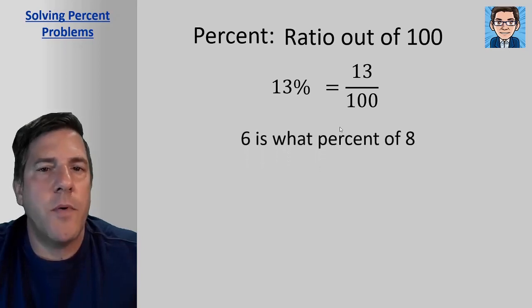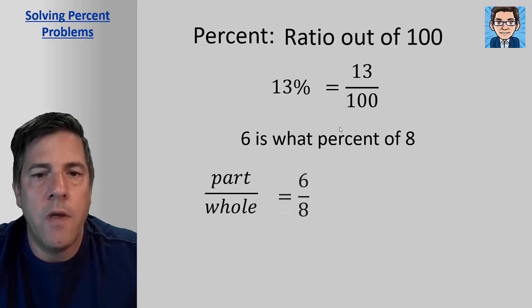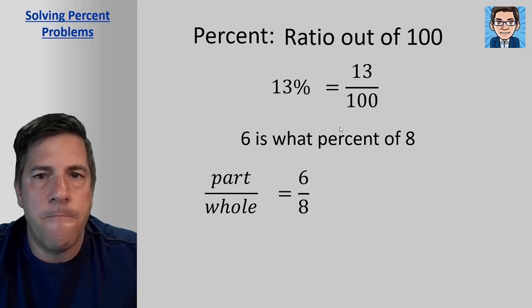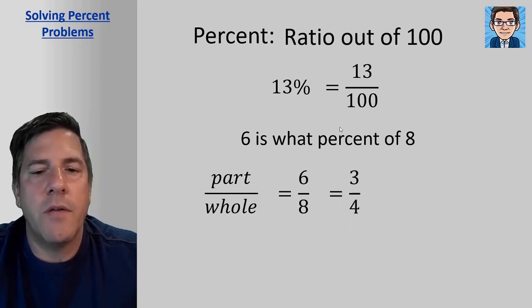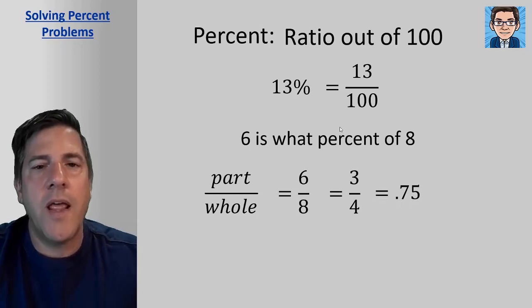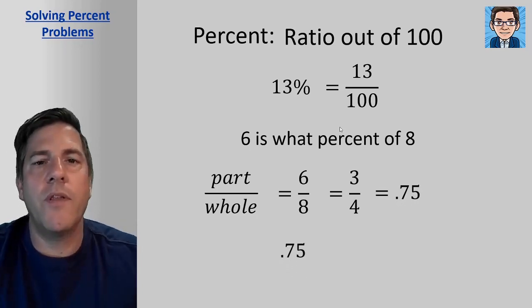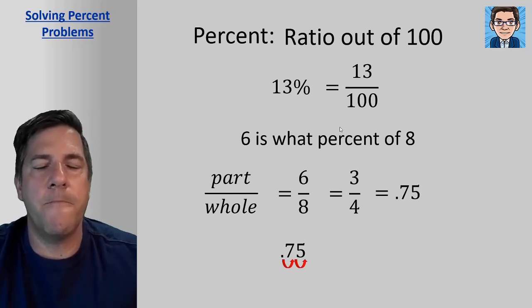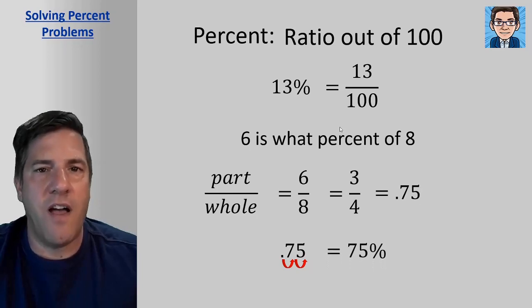To find a simple percent, six is what percent of eight? We can take that ratio of part over whole. So six divided by eight, we reduce that fraction and change it to a decimal, we get 0.75. So as a percent, we've got to move the decimal point over two places to make it a percent. So 0.75 as a percent is going to be 75 percent.